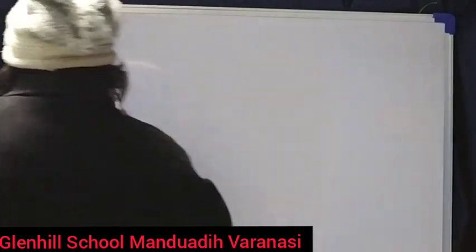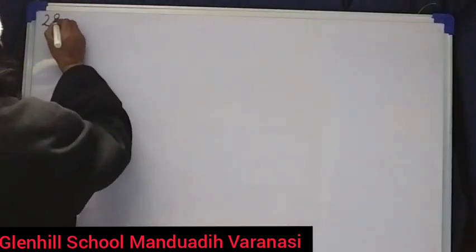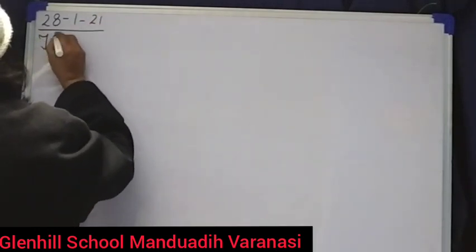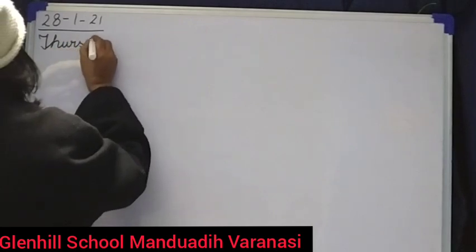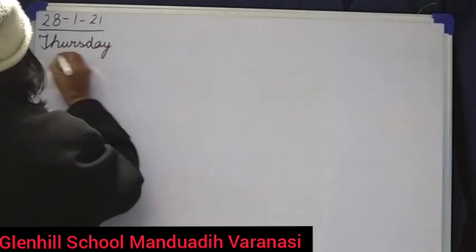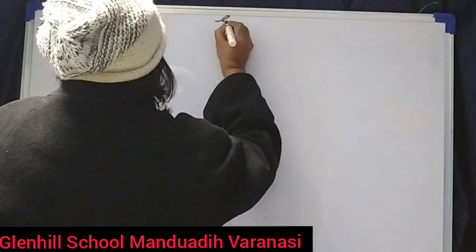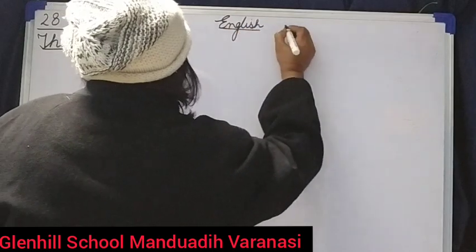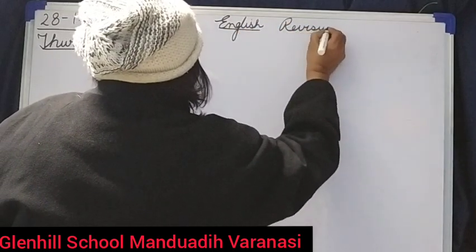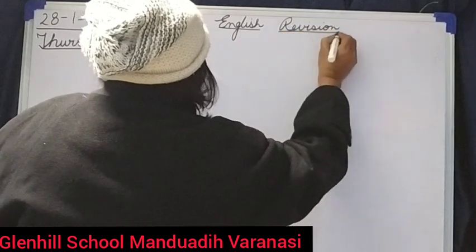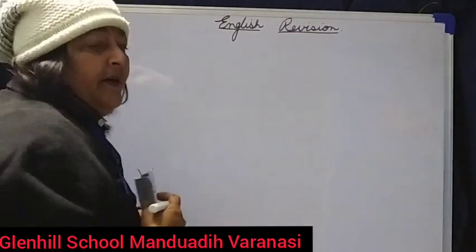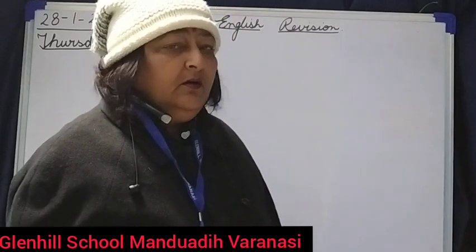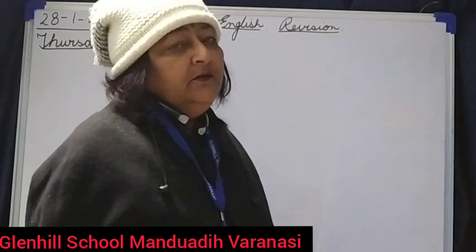What date is today? Today is 28, 1, 21 and the day is Thursday. Subject is English revision. So, children are you all ready? You have learned all the spellings. Shall we start? Check out the English notebook. Very good.